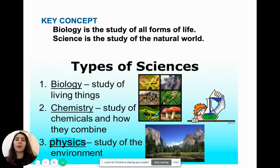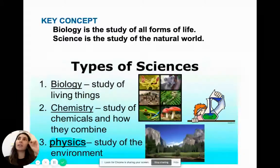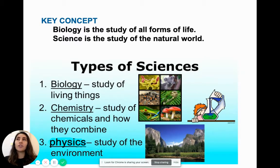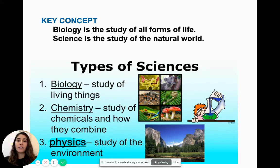In terms of the key concepts we're covering today: biology is the study of all forms of life, and science is defined as the study of the natural world. Biology focuses on our study of living organisms — any living organism that exists on our planet. Chemistry and physics are also forms of science, but they study different things. Chemistry focuses on chemicals and how they combine, and we will be covering a little bit of chemistry during our course this year.